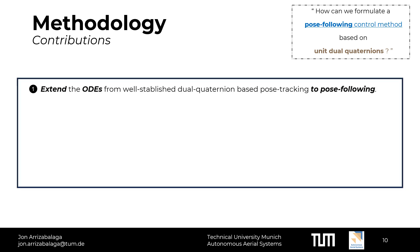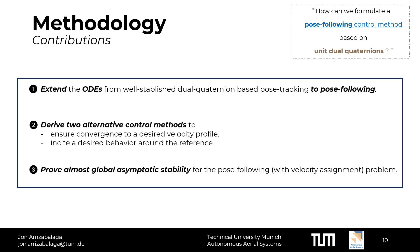To solve these problems and ultimately answer the previously stated research question, our contributions are threefold. First, we extend the unit-dual-quaternion-based ODEs from pose-tracking to pose-following. Second, we derive a unit-dual-quaternion-based pose-following control framework that can be tailored either to ensure convergence to a desired velocity profile or to incite a desired behavior around the reference. Third, we prove almost global asymptotic stability for the previously stated control law. Now, we will proceed to look into each contribution in more detail.